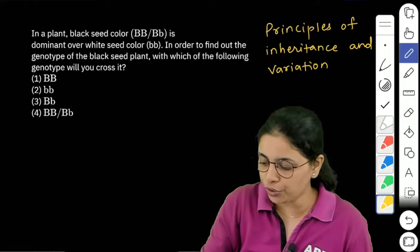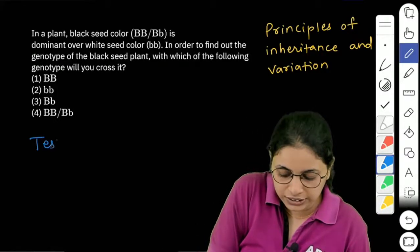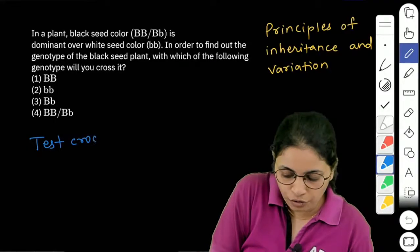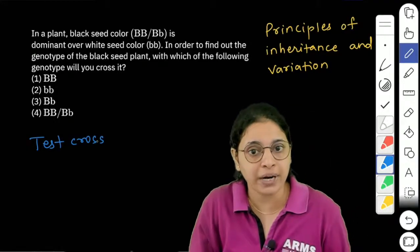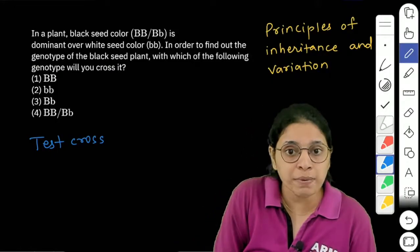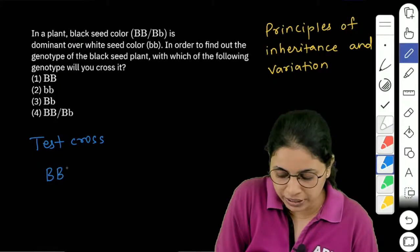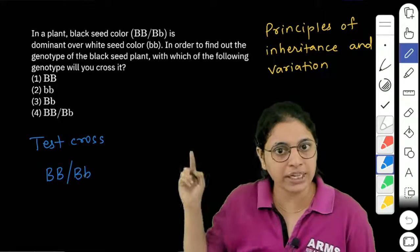To find the genotype of an unknown plant, we do a test cross. In this, we take the plant with unknown genotype - it could be either BB or Bb in this case.